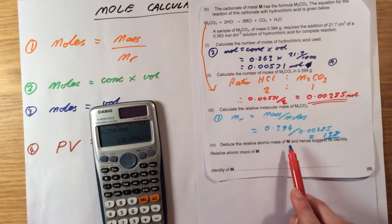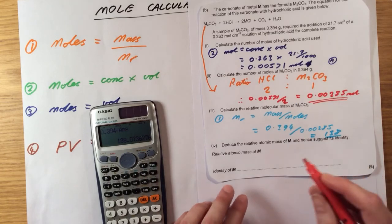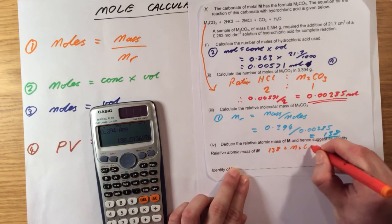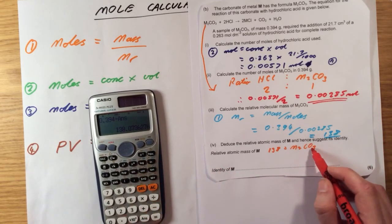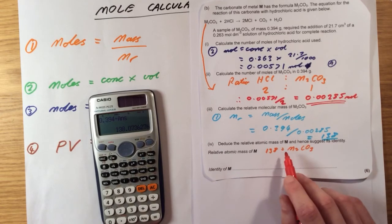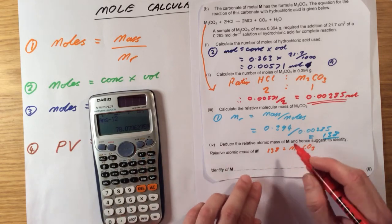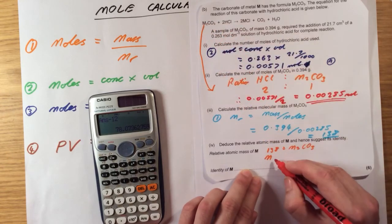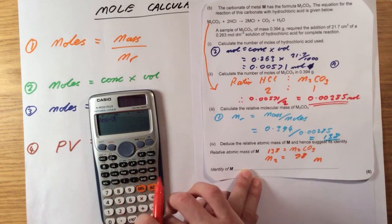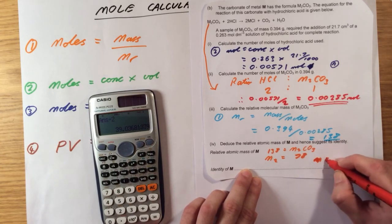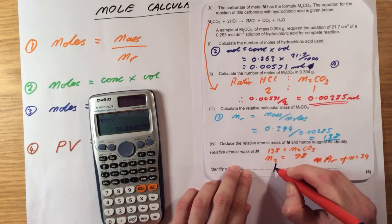The next question is asking me to deduce the relative atomic mass of M and hence suggest its identity. Right, so 138 is this whole carbonate here. Okay, so 138 is the MR of M2CO3. I don't know what M is, that's what I'm trying to work out, but I do know that carbon is 12, oxygen is 16. So I'm going to subtract the atomic masses of those four atoms there from my overall formula mass. I'm going to do minus 16 times 3, minus 12 for the carbon, okay, and I'm left over and I'm told that M2, so two atoms of M, has got a mass of 78, which means that M must have a mass of 39. This is actually going to be the atomic mass now, so it's going to be AR of M is 39. And if you look at your periodic table, you should find out that that is the atomic mass of potassium, K.